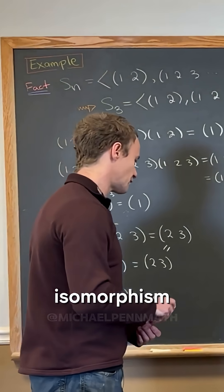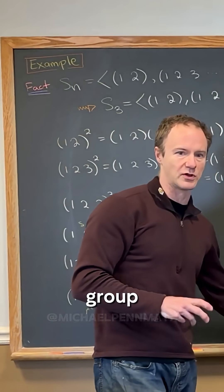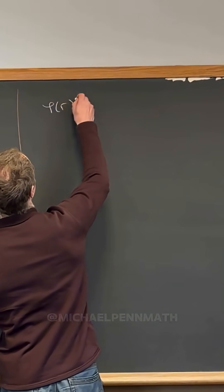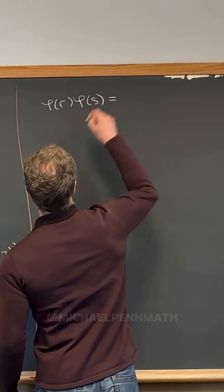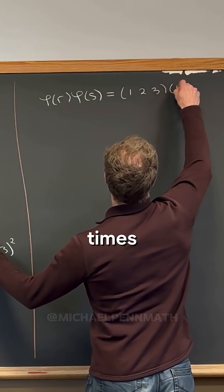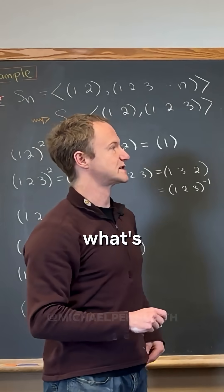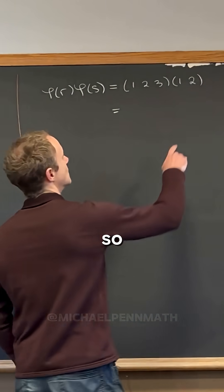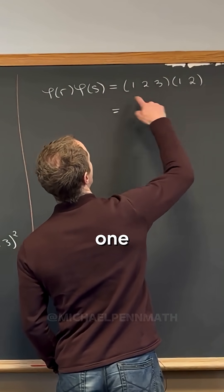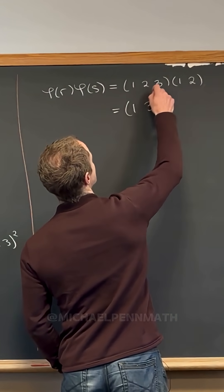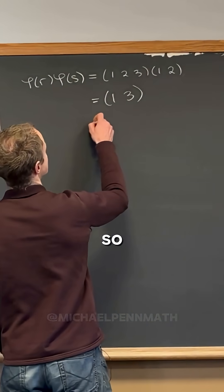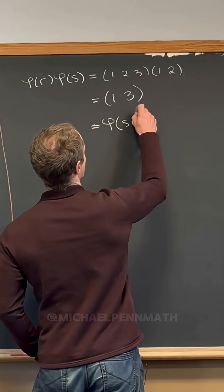To check it's an isomorphism, you have to verify the group law moves around the way it should. Let's compute phi(r) times phi(s): that's (1 2 3) times (1 2). One gets sent to two, two gets sent to three, so one in the end gets sent to three — giving (1 3), which is phi(sr²).